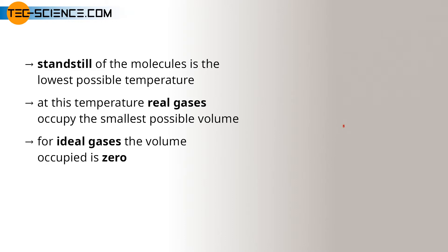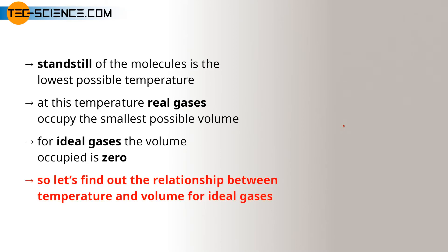This means that absolute zero can be determined by examining the laws between temperature and volume for an ideal gas in more detail, and then determining the temperature at which the volume should theoretically become infinitely small.